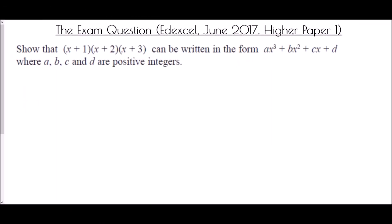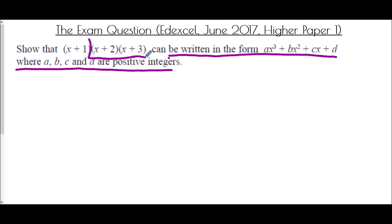And finally, we come to the exam question. It was from the Edexcel paper in June 2017, higher paper 1. It asks us to show that x plus 1, x plus 2, x plus 3 can be written in the form ax cubed plus bx squared plus cx plus d, where a, b, c, and d are positive integers. Basically, all it's saying is expand those three brackets. So first I expand x plus 2 times x plus 3, which gives x squared plus 5x plus 6.